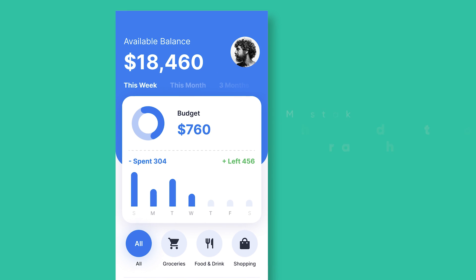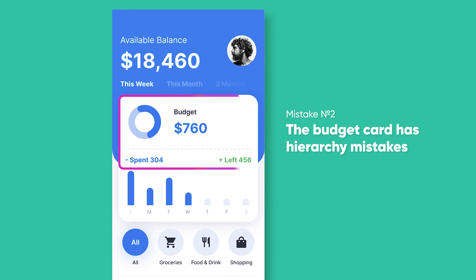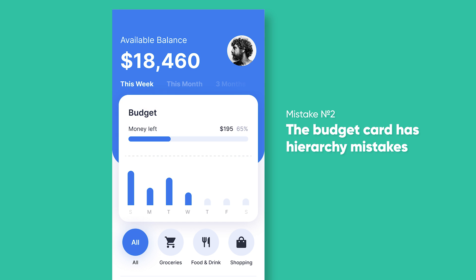Mistake number two is that the budget card has hierarchy mistakes and takes too much space. The card indicates how much of your budgeted money has been spent. Its main components are spending and the remainder of the budget. It is difficult for the user to keep up and complete their primary goal, and there is also insufficient space for transactions — which are a more vital aspect of mobile banking than budgeting. I'd switch the pie chart to a progress bar and include a percentage.